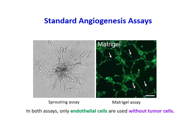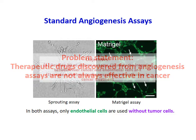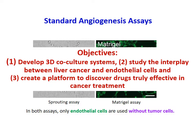In most angiogenesis assays, endothelial cells are used without tumor cells. Therapeutic drugs discovered and screened from these assays are not always effective in cancer, as these assays are not representative of tumor angiogenesis. Therefore, we aim to develop a 3D co-culture system to study tumor angiogenesis and for the discovery of drugs which are truly effective in the treatment of cancer.